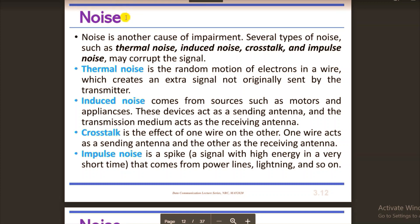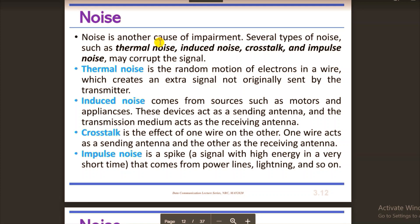This noise will be added to the original signal. This is the problem of attenuation — loss of energy — and distortion. Our composite signal will be broken down from individual simple sine waves. We receive a distorted version of the original message. So this is the problem of transmission impairment.